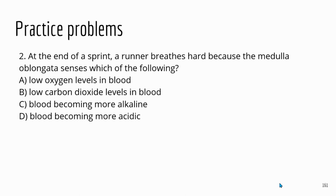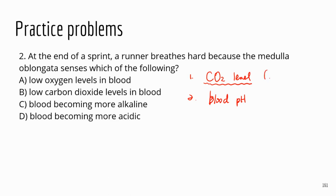Question two: at the end of a sprint, a runner breathes hard because the medulla oblongata senses which of the following? The regulation of breathing is controlled by the medulla oblongata, which relies on sensors that monitor carbon dioxide level and blood pH. It's important to note that the sensors monitor carbon dioxide level — not oxygen level. Your body is actually monitoring carbon dioxide level, not oxygen level.